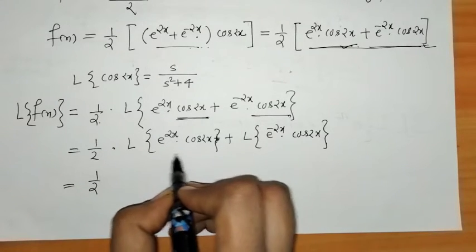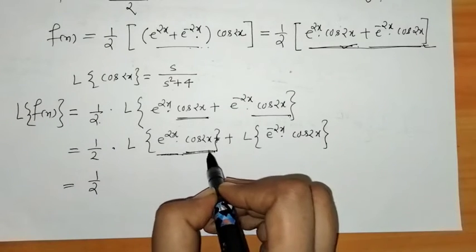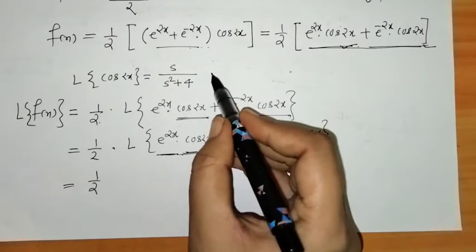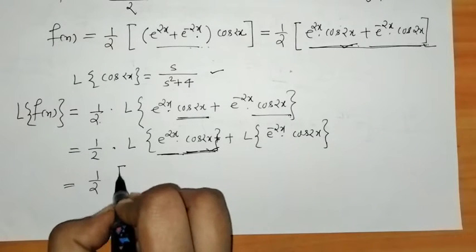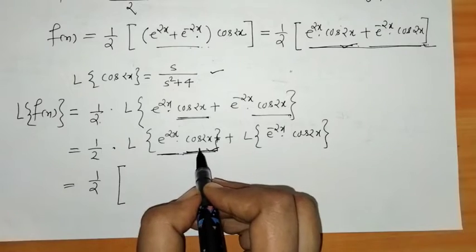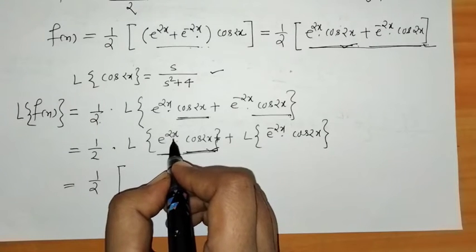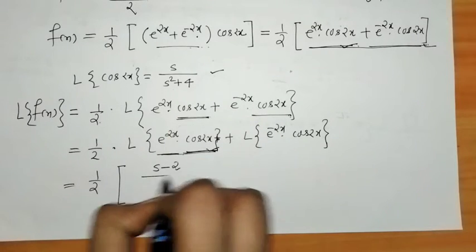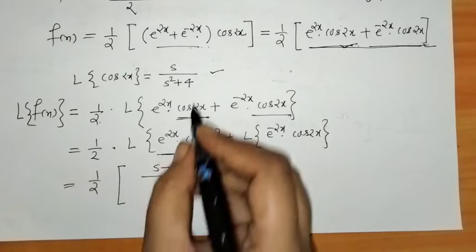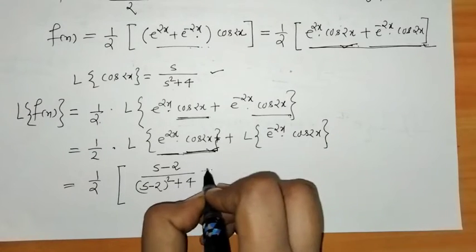Here we have a function multiplied by an exponential, and we know the Laplace of cos(2x). Applying the First Shifting Property, we replace s by s minus α. For the first term, α equals 2, so we replace s by s minus 2, giving us (s−2) divided by (s−2)² plus 4.